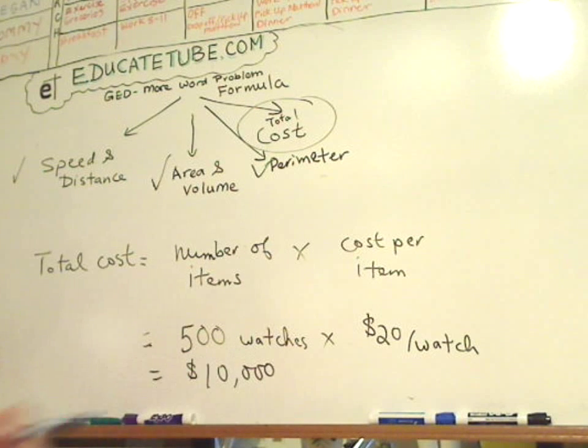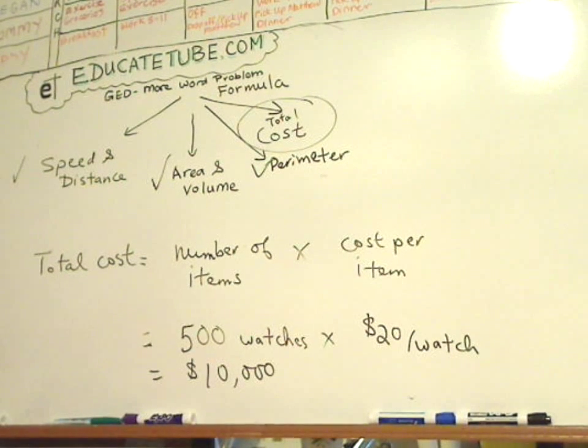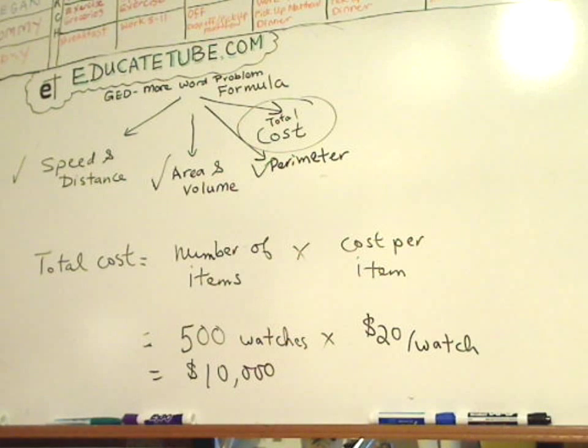Because 500 times 2 is $1,000, but then it's 20 times 500, so $10,000.